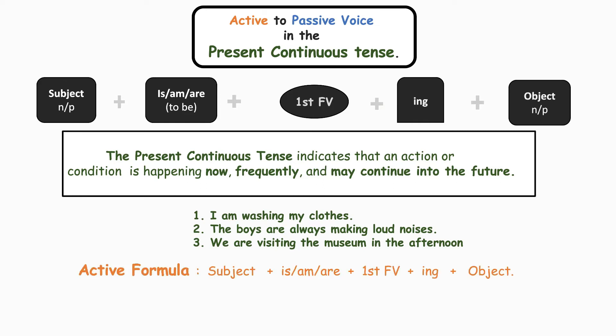Here is the structural formula of the present continuous tense for the active voice: subject plus is/am/are plus first form of the verb plus -ing plus the object. Here is a sentence: 'I am washing my clothes.' 'I' is the subject — the doer of the action — then is/am/are, then the first form of the verb 'wash' plus -ing, and then comes the object in which the action is done upon.